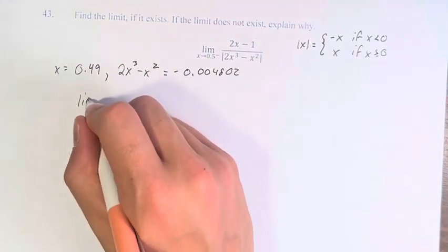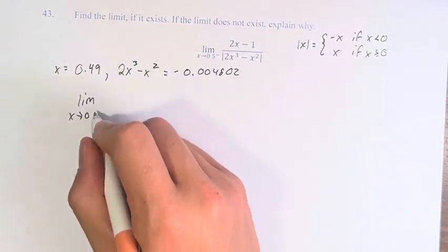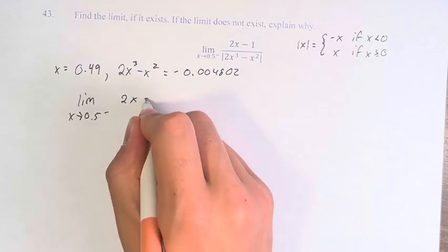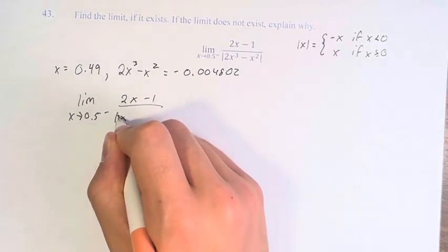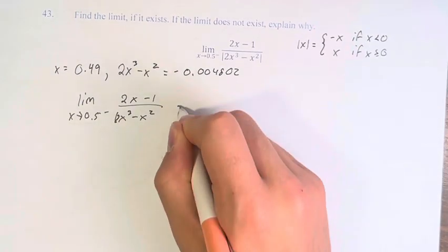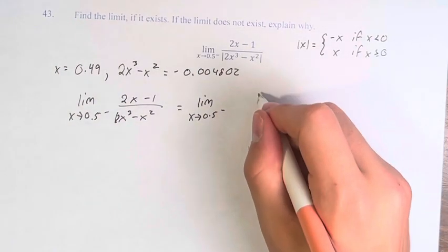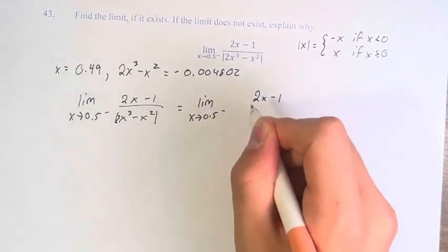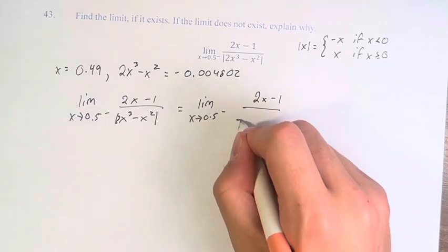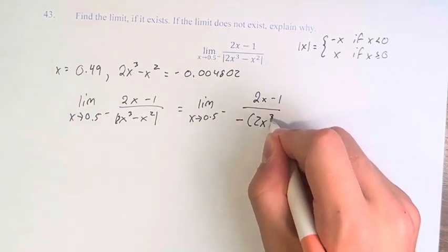Therefore, this limit is equal to 2x minus 1 over negative 2x cubed minus x squared.